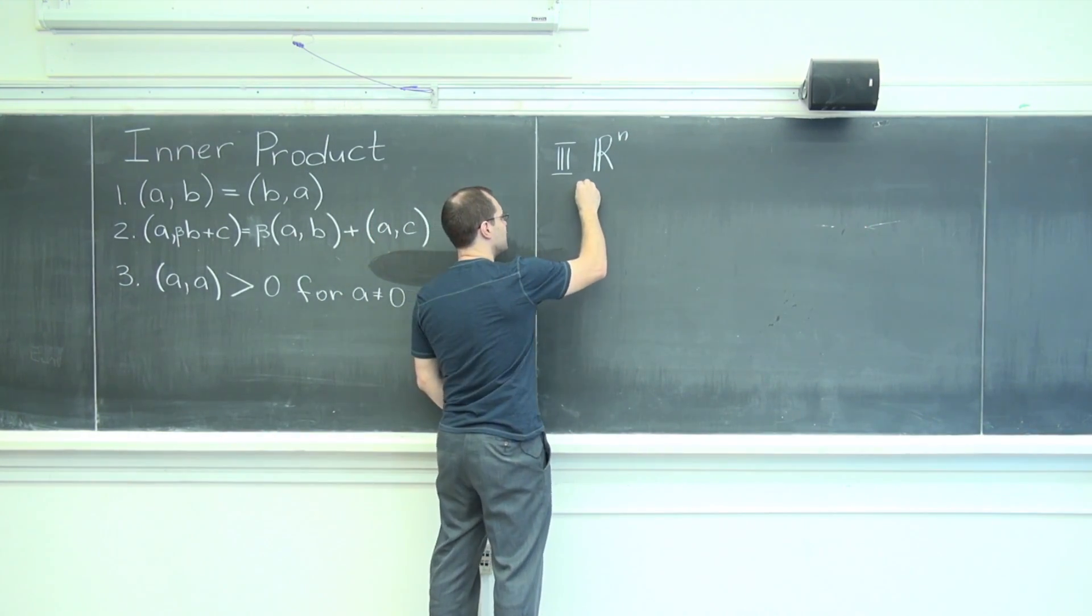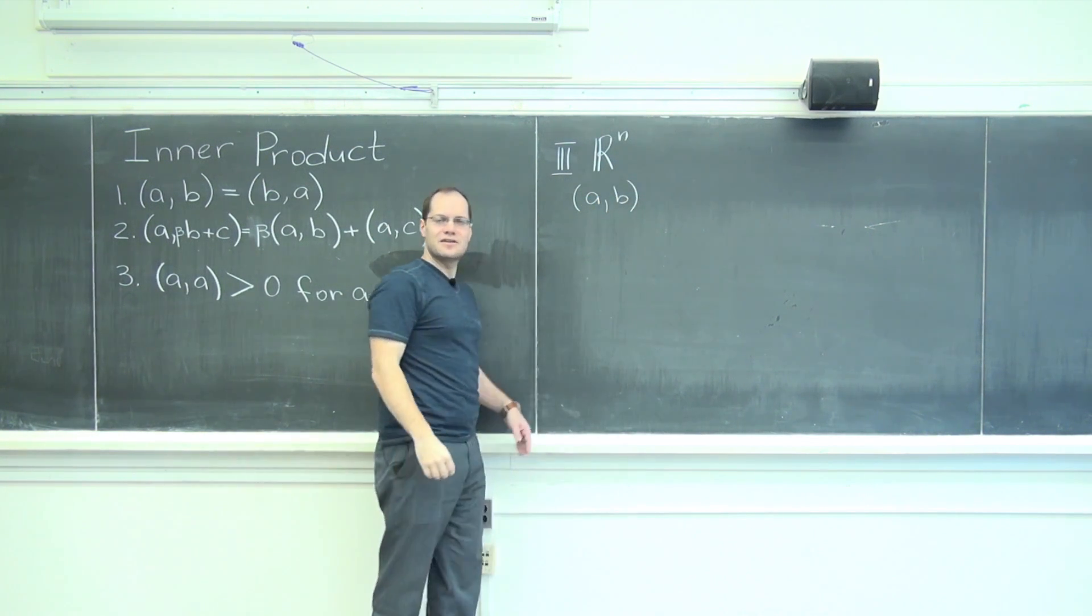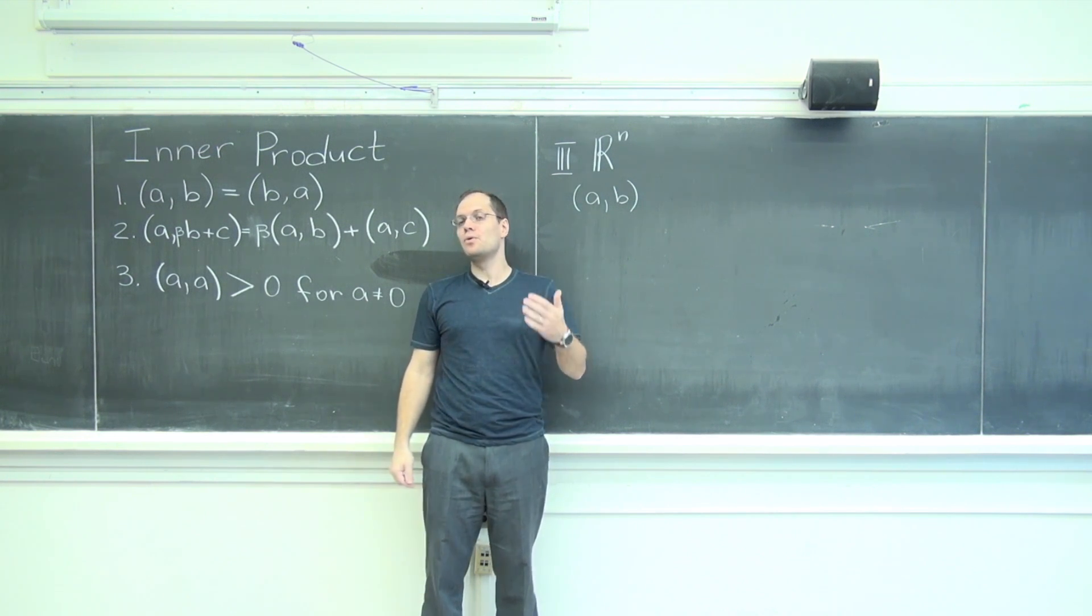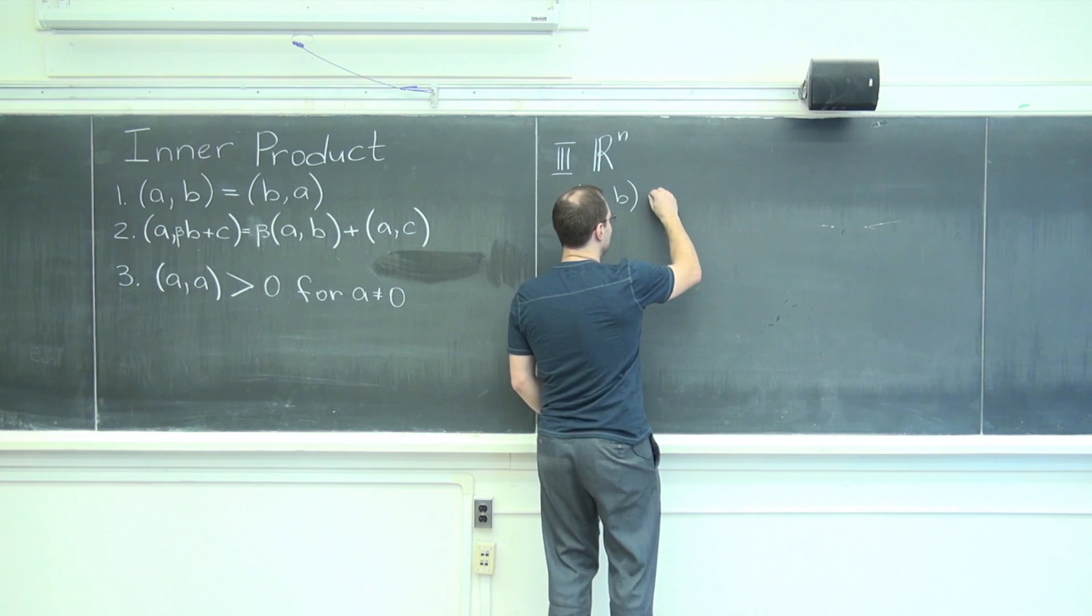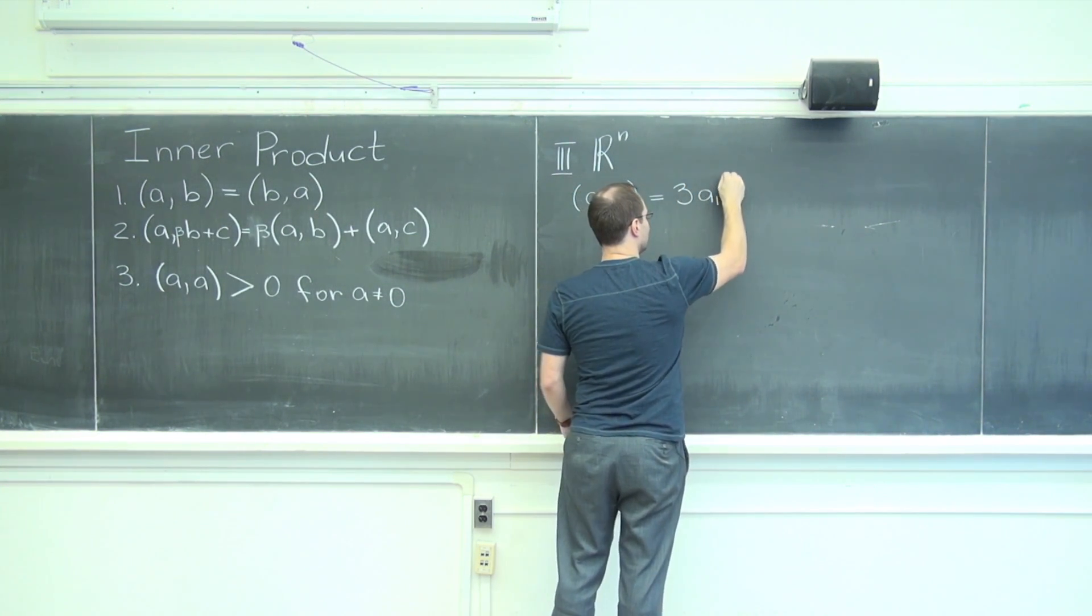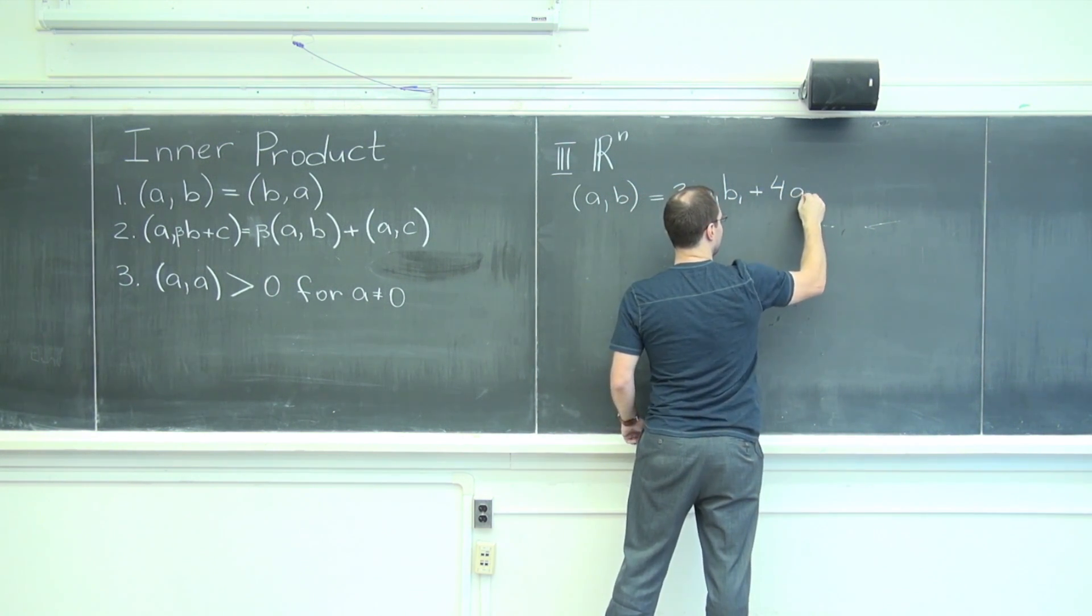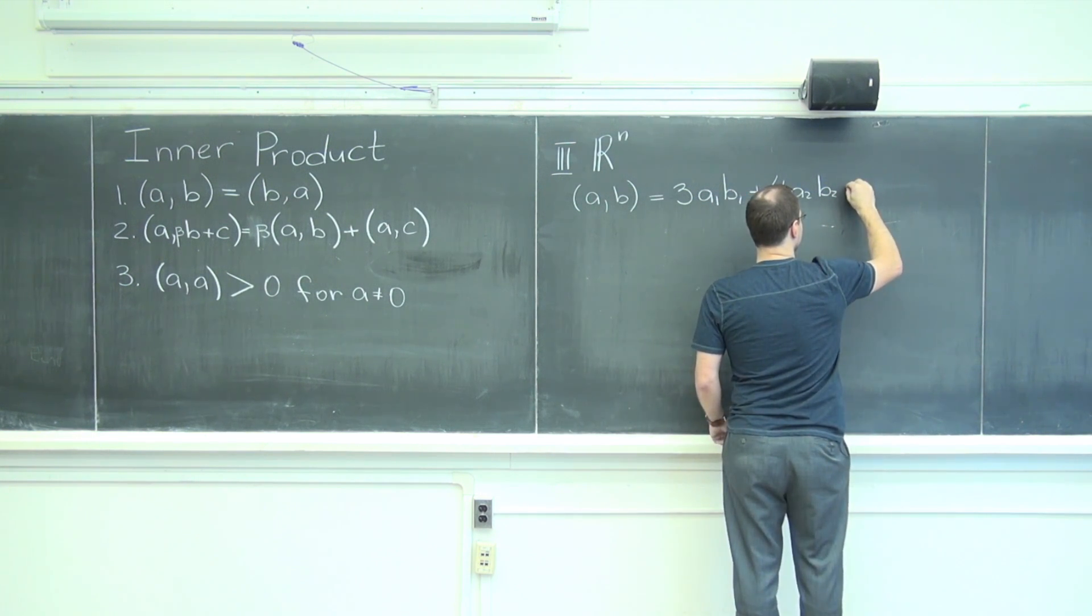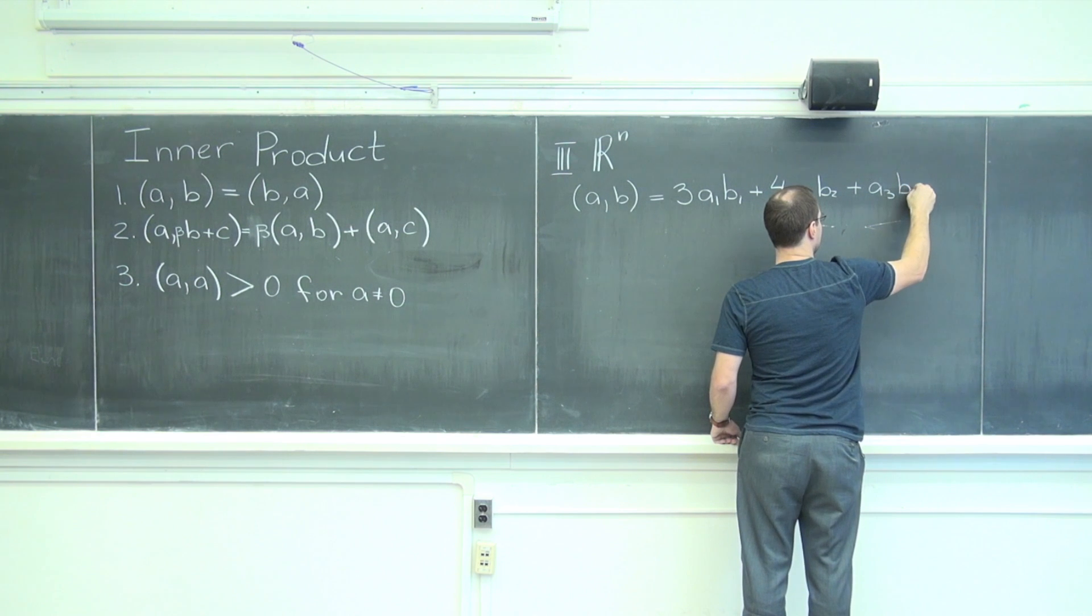So we'll have two vectors in R³, a and b, and their entries are a₁, a₂, a₃ and b₁, b₂, b₃. You guys are cool with that. And then how about this definition: 3a₁b₁ plus 4a₂b₂ plus—I'll just keep it simple—a₃b₃.